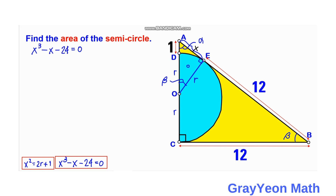Notice that we have the cubic equation x³ - x - 24 = 0, which has no second-degree term. For this type of cubic, we find the factors of 24: these are 1 and 24, 2 and 12, 3 and 8, and 4 and 6.